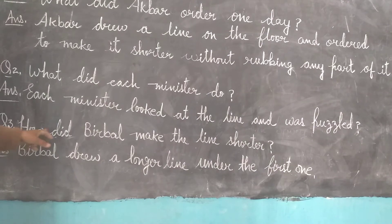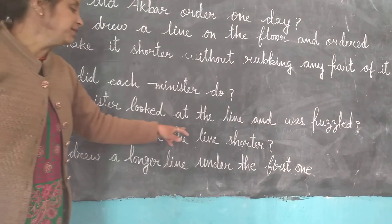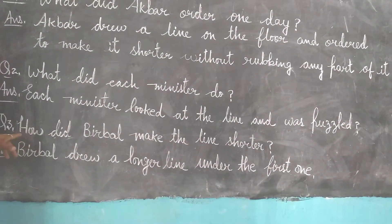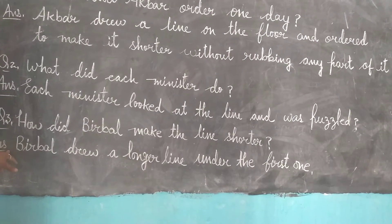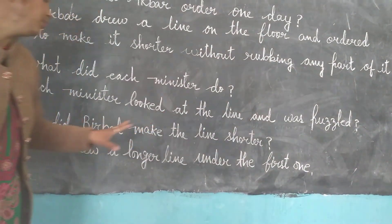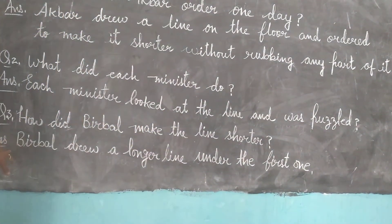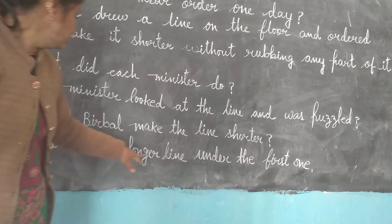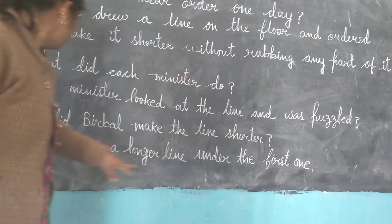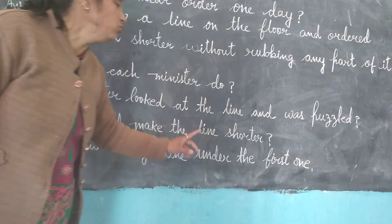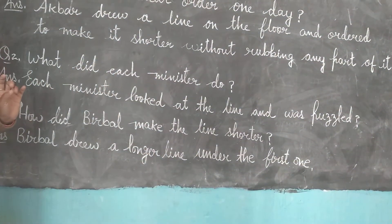Question number 3: How did Veerbal make the line shorter? Answer: Veerbal drew a longer line under the first line. Veerbal drew a longer line beneath the original line to make it look shorter. Okay?